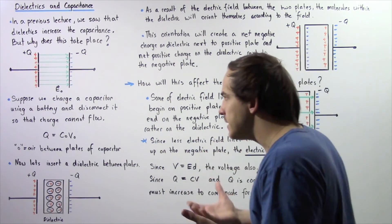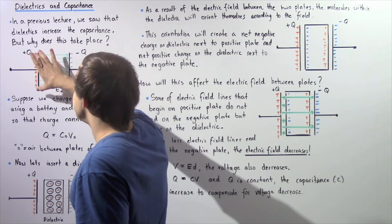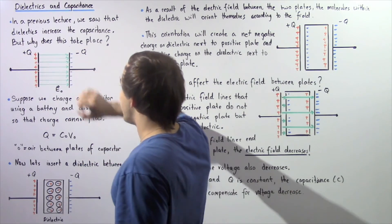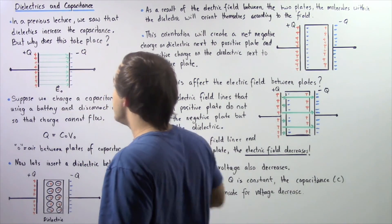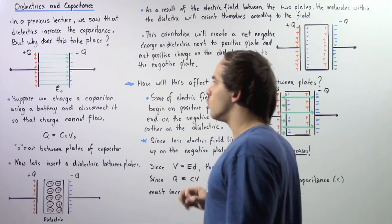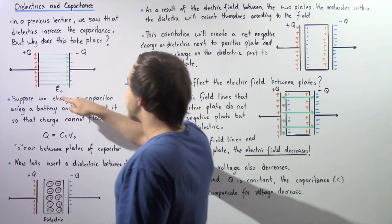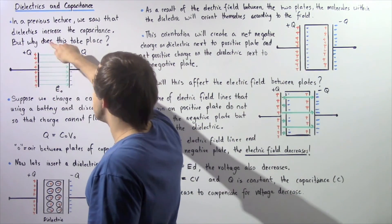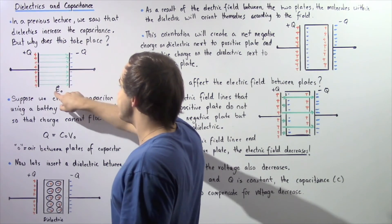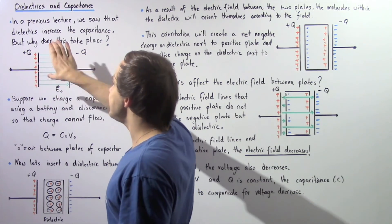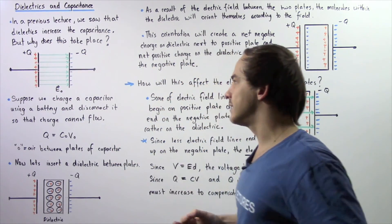Now the electric field lines will begin on the positive plate and will end at the negative plate, as shown by the following green vectors. So initially, our electric field between these two plates is given by E₀ and it is assumed to be constant.